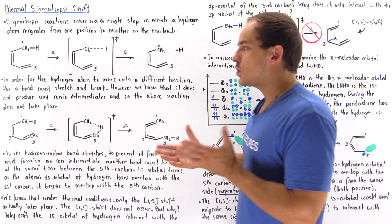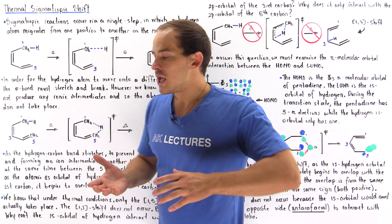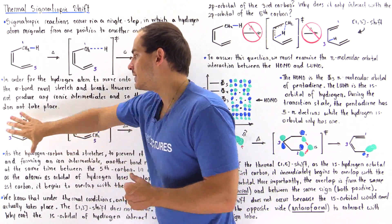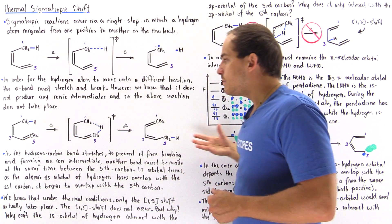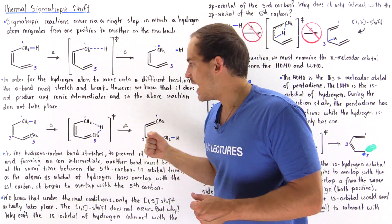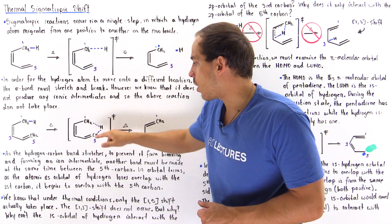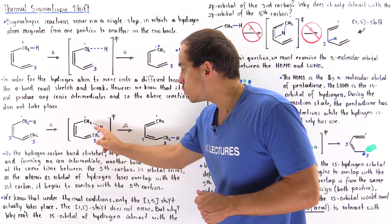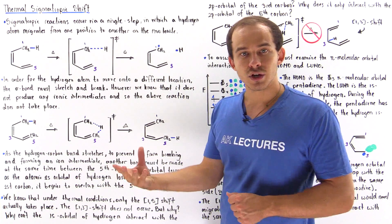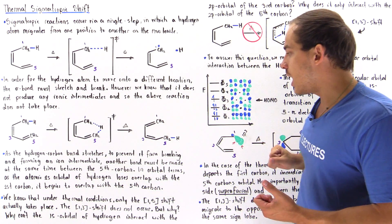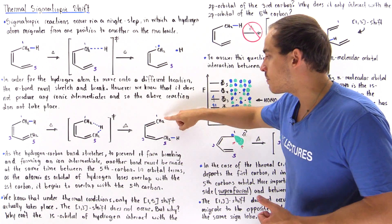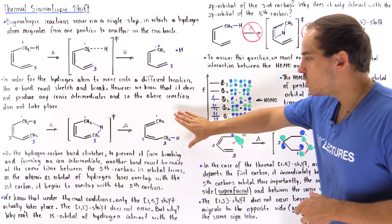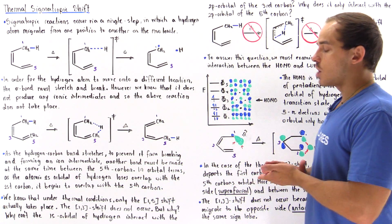We can also discuss this in terms of orbital overlap. The 1s orbital and the p orbital of the first carbon overlap to form the bond on the reactant side. When we undergo the transition state, the overlap between the 2p orbital of this carbon and the 1s orbital of the H atom decreases, but the overlap between the fifth carbon and the H atom begins to increase. At the end, when we form the product, overlap is lost between the first carbon and the H atom, but overlap is gained between the H atom and the fifth carbon.